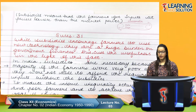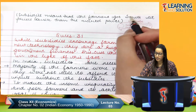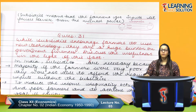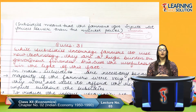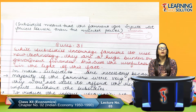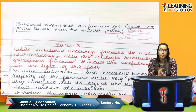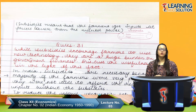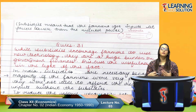Subsidies basically mean that farmers get inputs at a price lower than the market price. It is a form of government aid — inputs are provided at a lower rate than the rate prevailing in the market. For example, LPG subsidies. The government knows farmers cannot afford such facilities at market price, so subsidies are the provision of a good or service at a rate lower than the market rate.